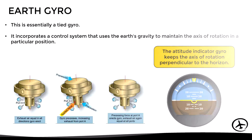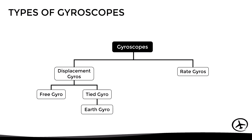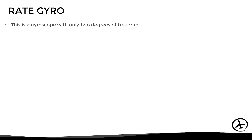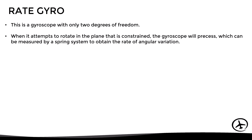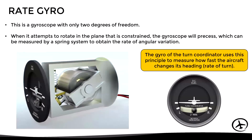Now let's continue with rate gyros. A rate gyro only has two degrees of freedom, meaning it is restricted in one of the axes. When it attempts to rotate in the constrained plane, the gyroscope will precess, which can be measured by a spring system to obtain the rate of angular variation. This type of gyro can be found in the turn coordinator, where it is used to measure the rate of turn — in other words, how fast the aircraft is changing its heading.